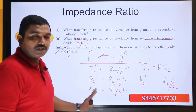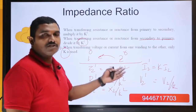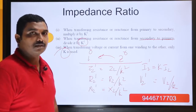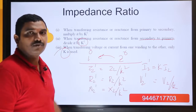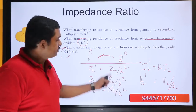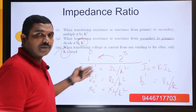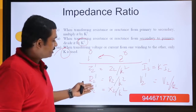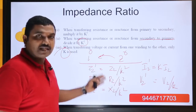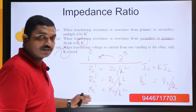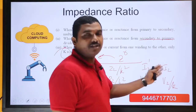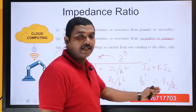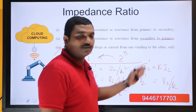Taking elements from secondary and inserting into the primary: Z2 becomes Z2 dash equals Z2 by K squared; R2 becomes R2 dash equals R2 by K squared; X2 becomes X2 dash equals X2 by K squared; I2 becomes I2 dash equals K times I2; V2 becomes V2 dash equals V2 divided by K. This is very, very important and will be essential for drawing the equivalent circuit of the transformer.